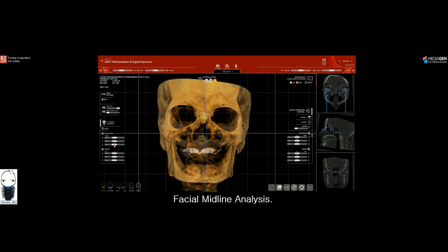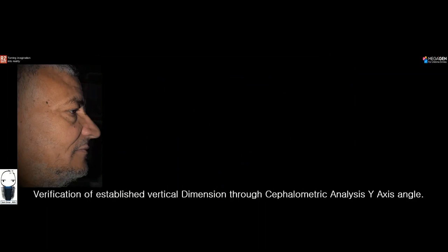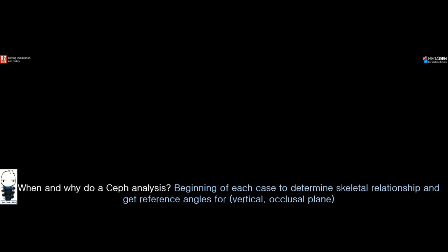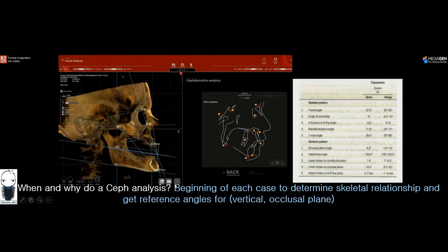Now we have established a facial midline — this is the starting point of our treatment plan. We also set the vertical dimension in the patient's mouth, a process we're all familiar with. We do our cephalometric analysis at the beginning of each case to determine the skeletal relationship and get reference angles for vertical and occlusal plane. Step 4 in R2Gate DOD — the facial analyzer — gives us the y-axis angle and helps establish the occlusal plane angle.